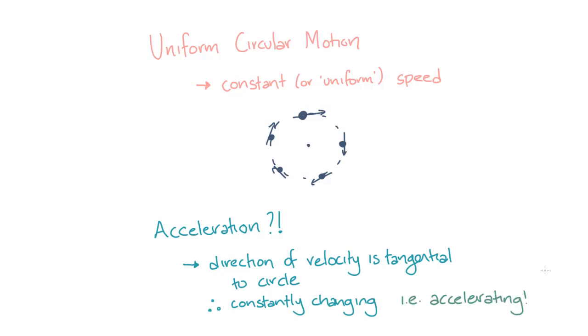So, let's find the acceleration of the object. Well, firstly, we know that the acceleration a is equal to the change in velocity Δv divided by the change in time Δt. So, let's try to work out what each one of these is separately. Let's start by working out the change in velocity delta v.